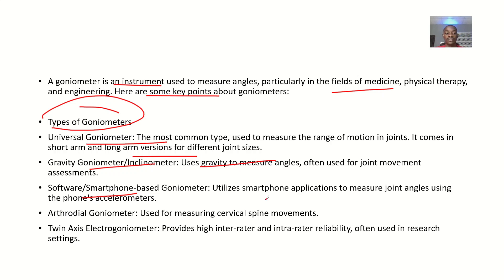The software or smartphone-based goniometer utilizes smartphone apps to measure angles, using the phone's accelerometer. For example, there is one available on the iPhone that can measure length, act as a ruler, and function as a goniometer.